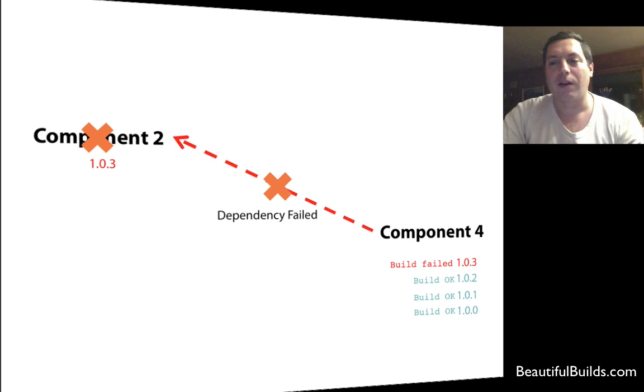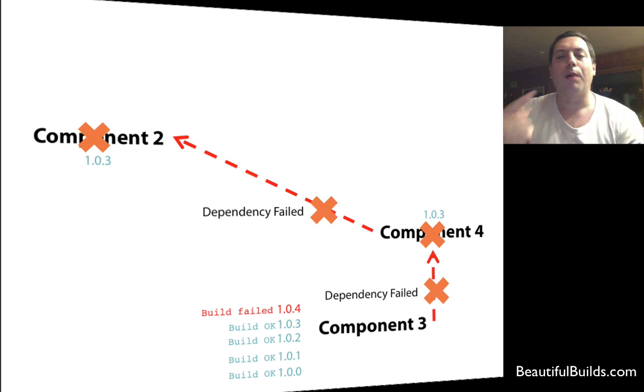Same with component four. If that fails, component two fails. What if component three fails? It actually will affect component two as well. You see, in this case, component three failed to build 1.0.4, which consequently failed component four.